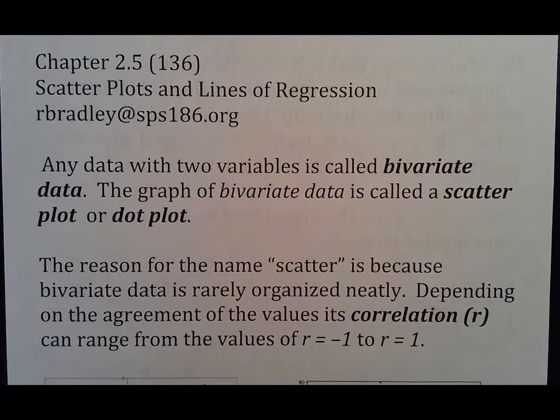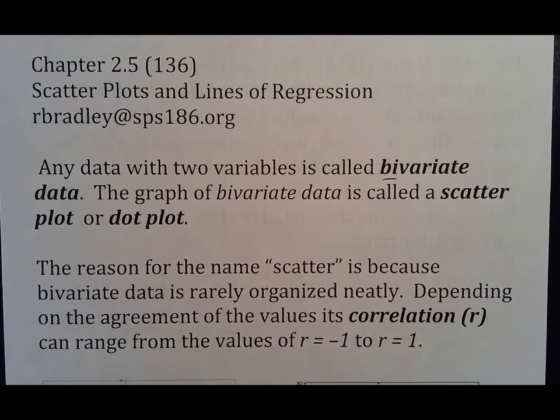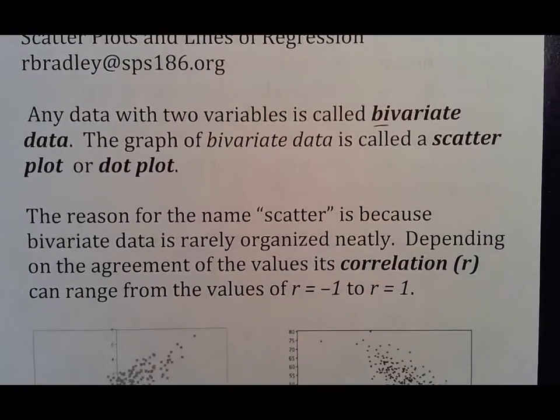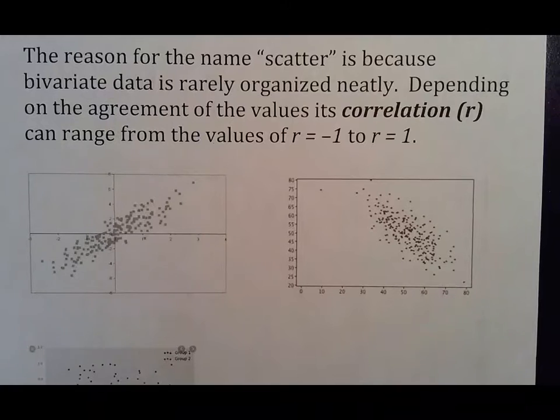Chapter 2.5 is about scatter plots and what we call lines of regression. Any data with two variables is called bivariate, bivariate meaning two, variate like variable. The graph is called a scatter plot or a dot plot. The reason for the name scatter is because bivariate data is rarely organized neatly. Depending on the agreement of values or its correlation, can range from the values of r equals negative one to r equals one.